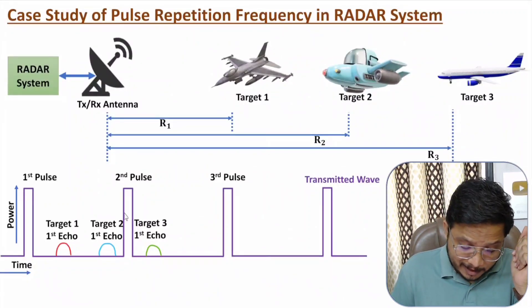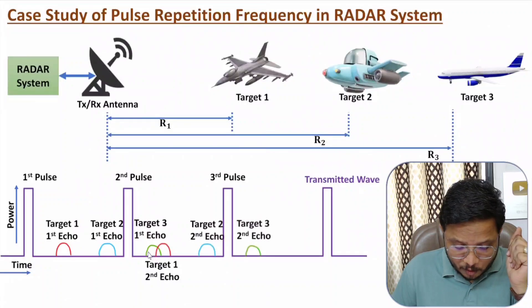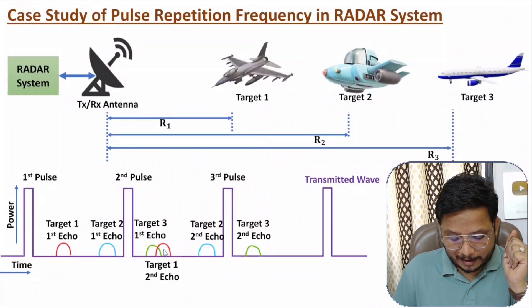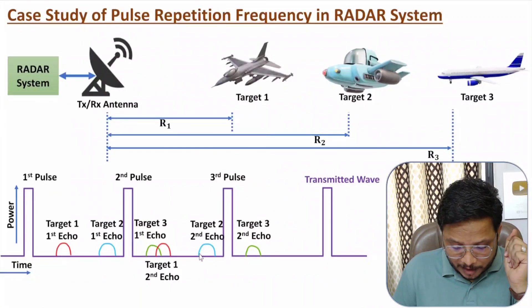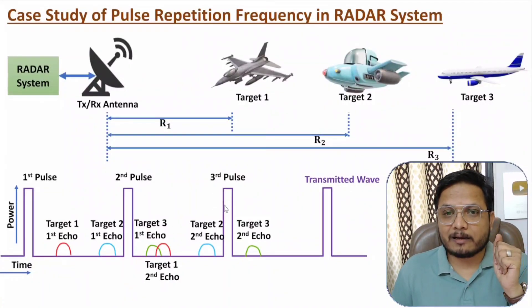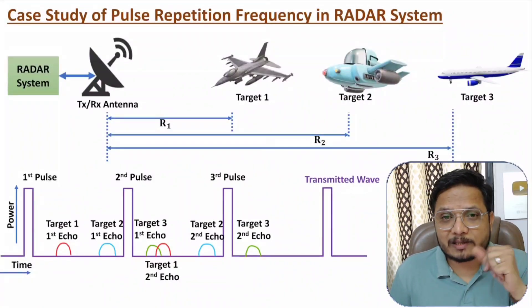After transmission of the second pulse, again there will be echoes from target one, target two, and target three. The echo of target one coincides with the first echo of target three, creating ambiguities. Target two echo appears, and then the second echo of target three comes after the third pulse. That is how ambiguities are added when you increase pulse repetition frequency.